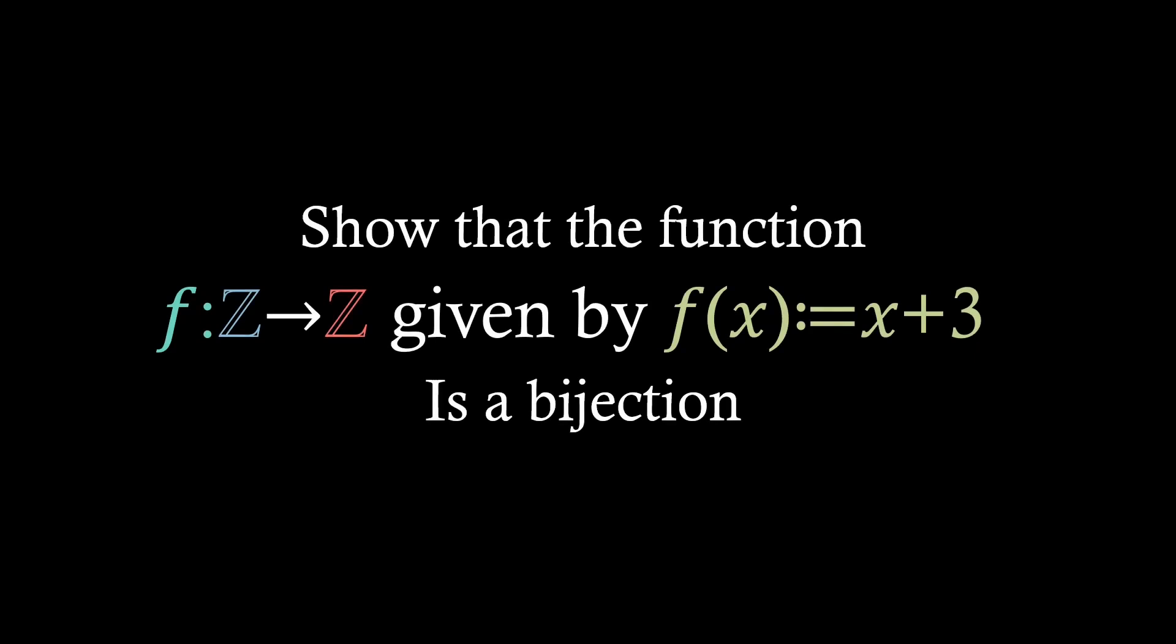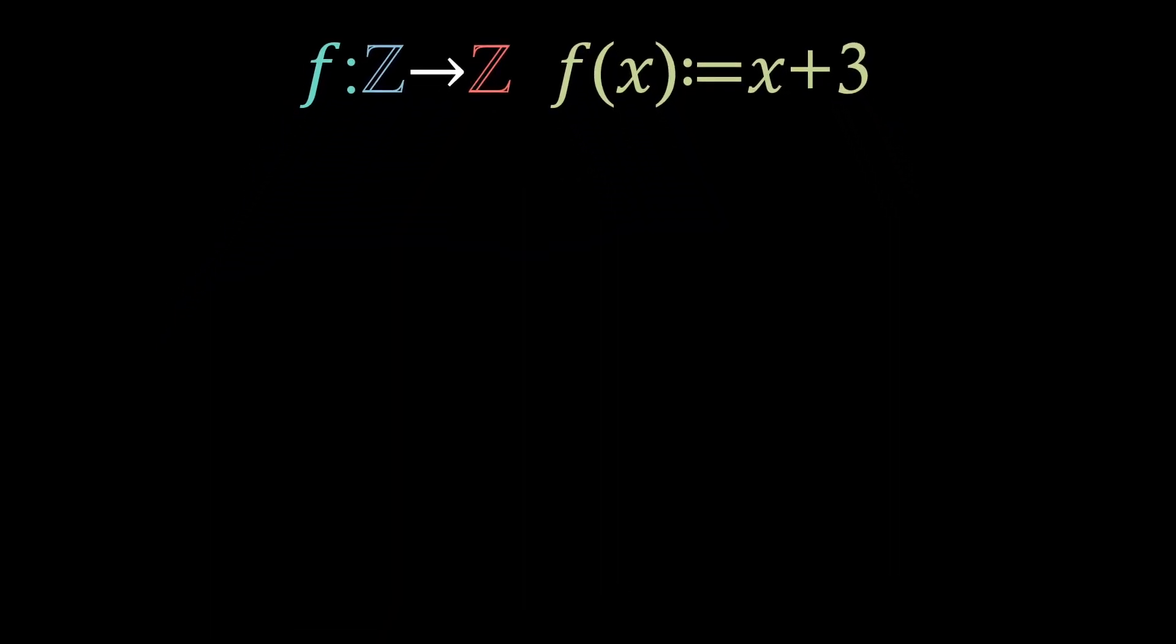Now, let's look at a worked example. How do we show that f, from integers to integers, given by f of x equals x plus 3 is a bijection? Well, we know that we have to show that f is surjective and injective.